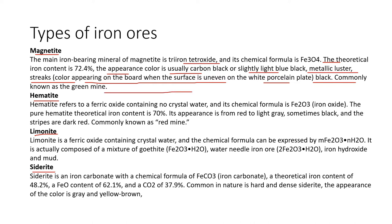Hematite refers to ferric oxide containing no crystal water, with chemical formula Fe2O3. The pure hematite theoretical iron content is 70%. Its appearance ranges from red to light grey, sometimes black, and streaks are dark red. Hematite is commonly known as red mine, while Magnetite is commonly known as green mine.